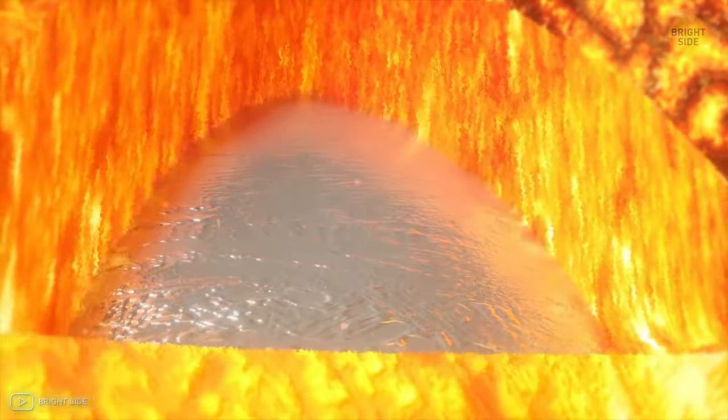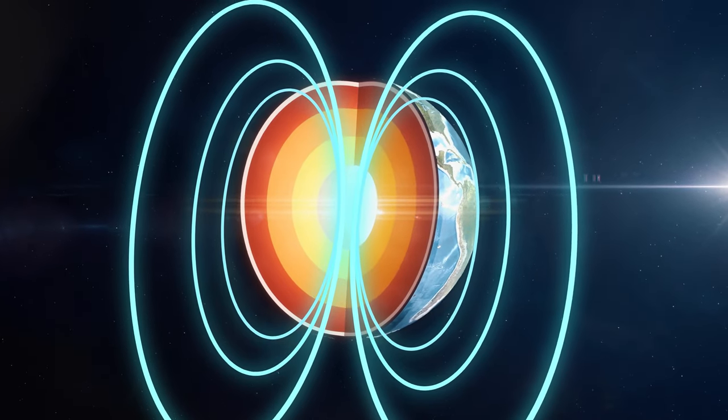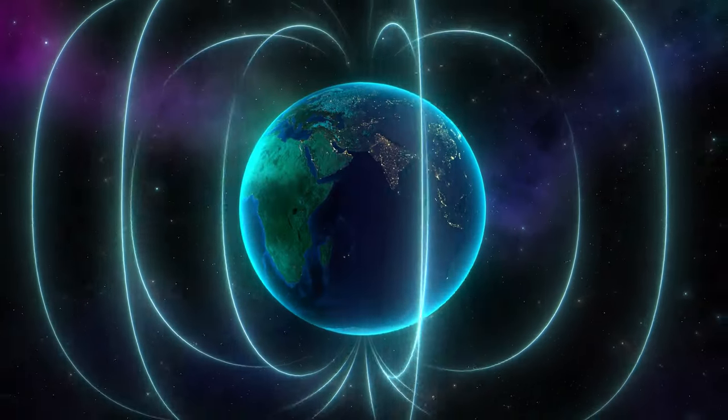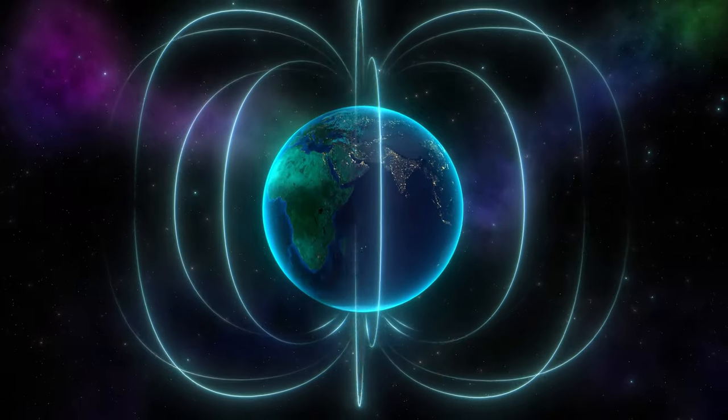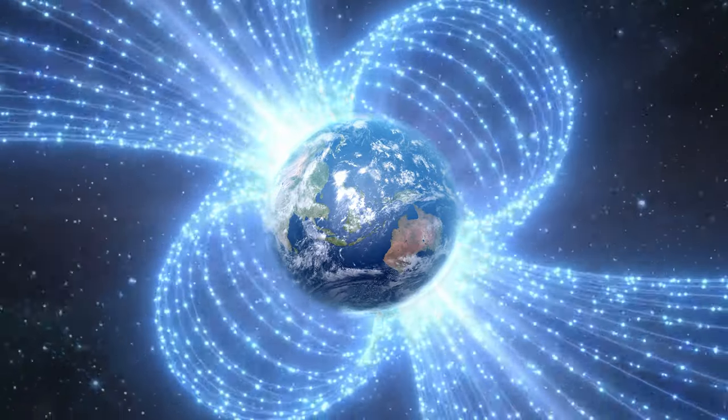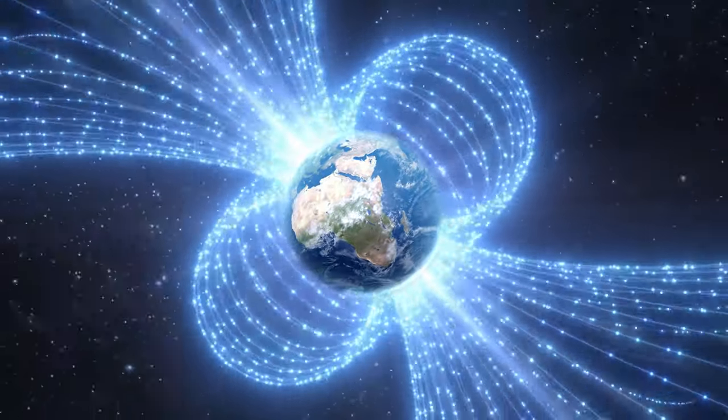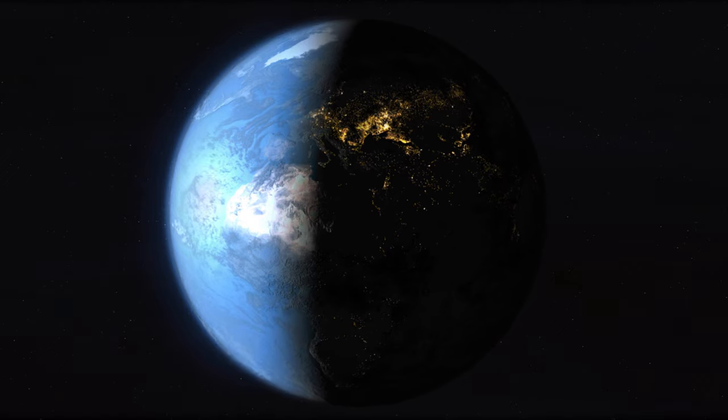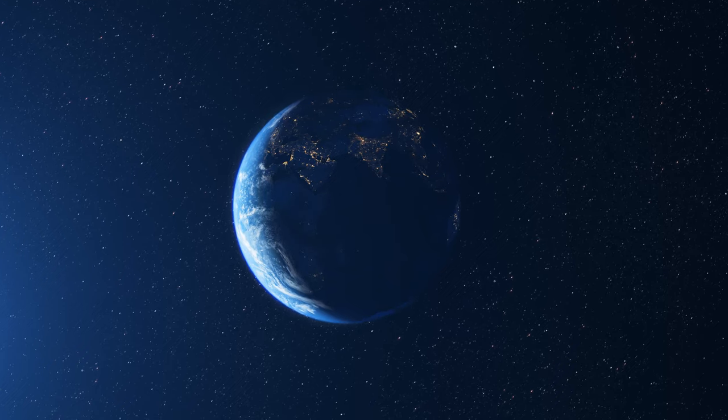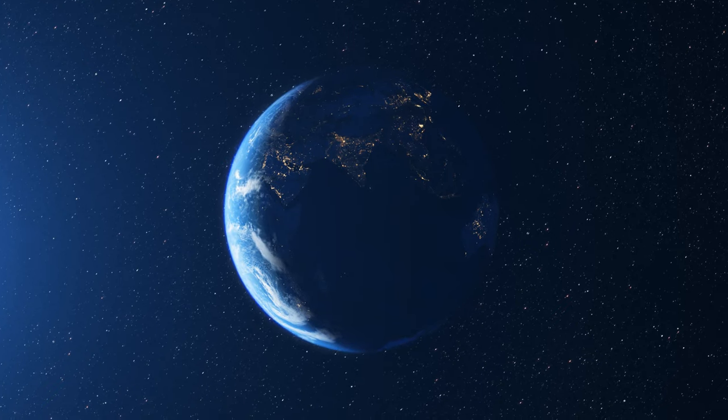lies the key to this mystery. A restless ocean of molten iron is churning, creating a magnetic force that envelops our world. But this force is not as constant as we once thought. This is the story of Earth's geomagnetic inversions, a phenomenon as mysterious as it is fascinating.